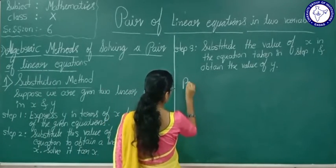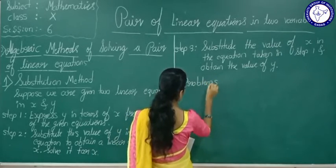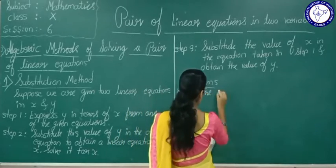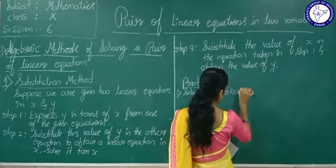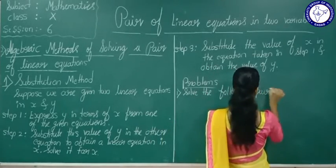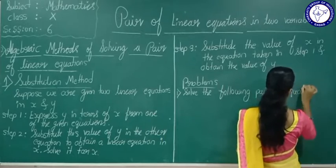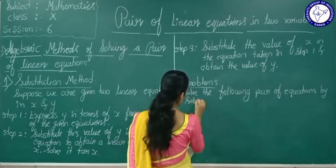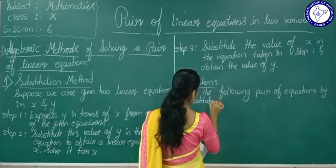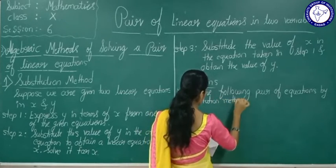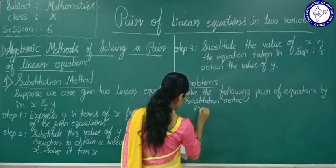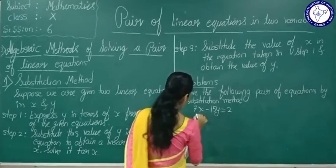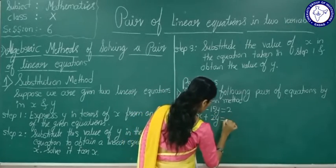Our first problem: solve the following pair of equations by substitution method. The equations are 7x minus 15y is equal to 2, and x plus 2y is equal to 3.